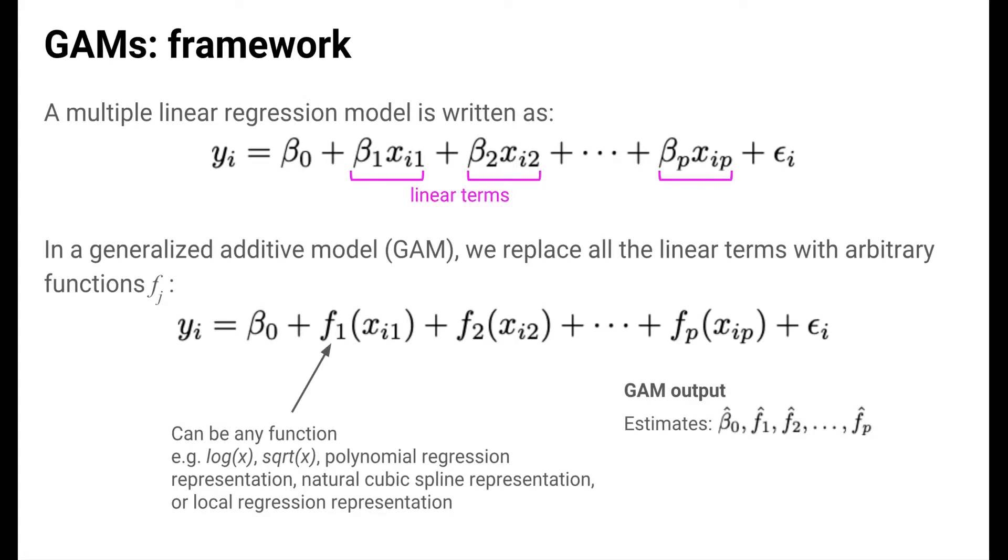What output do we get when we fit a GAM? We get estimates of the intercept, f1, f2, all the way up through fp.